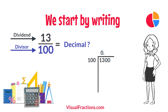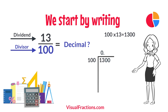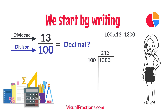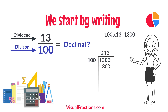How many times does 100 go into 1300? Exactly 13 times. We write 13 after the decimal point in the quotient, making it 0.13. Multiplying 13 by 100 gives us 1300. When we subtract 1300 from 1300, we get a remainder of 0.